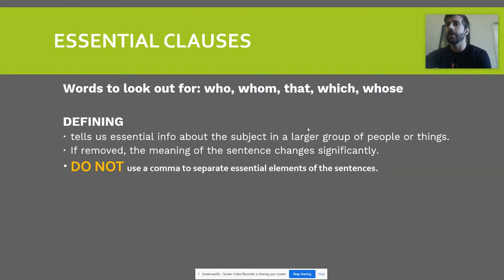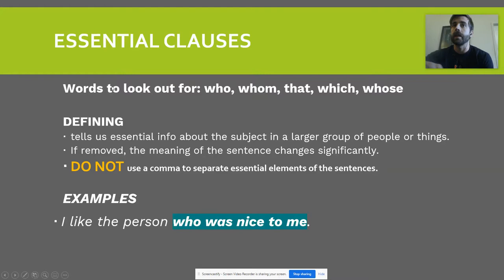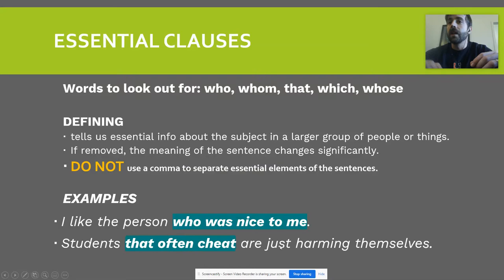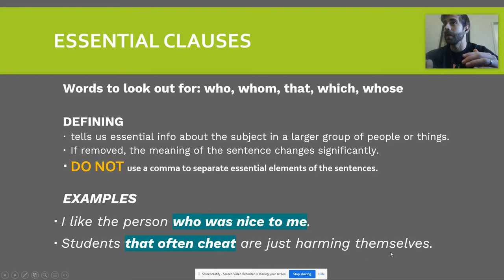Do not use a comma to separate essential clauses from the elements of a sentence. These are just going to be part of your standard sentence — no punctuation needed for essential clauses. For example: 'I like the person who was nice to me.' This gives essential information about which person we're talking about. I could say 'I like the person,' but to be specific in a world of 7 billion people, I'm talking about the one who was nice to me. Another example: 'Students that often cheat are just harming themselves.' If I remove 'that often cheat,' the meaning changes entirely — it would say all students are harming themselves, which is not true.